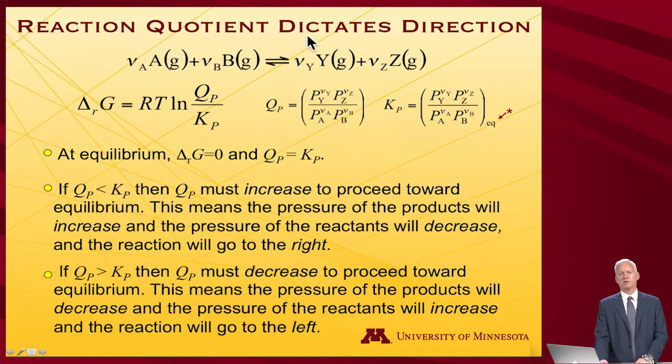So the reaction quotient then dictates the direction of the reaction. So here's our balanced chemical reaction. Here's the expression for the free energy of reaction involving these two. Here are the definitions of reaction quotient and equilibrium constant. And again, I just really want to highlight that equilibrium subscript. Equilibrium subscript matters. And what are the rules?